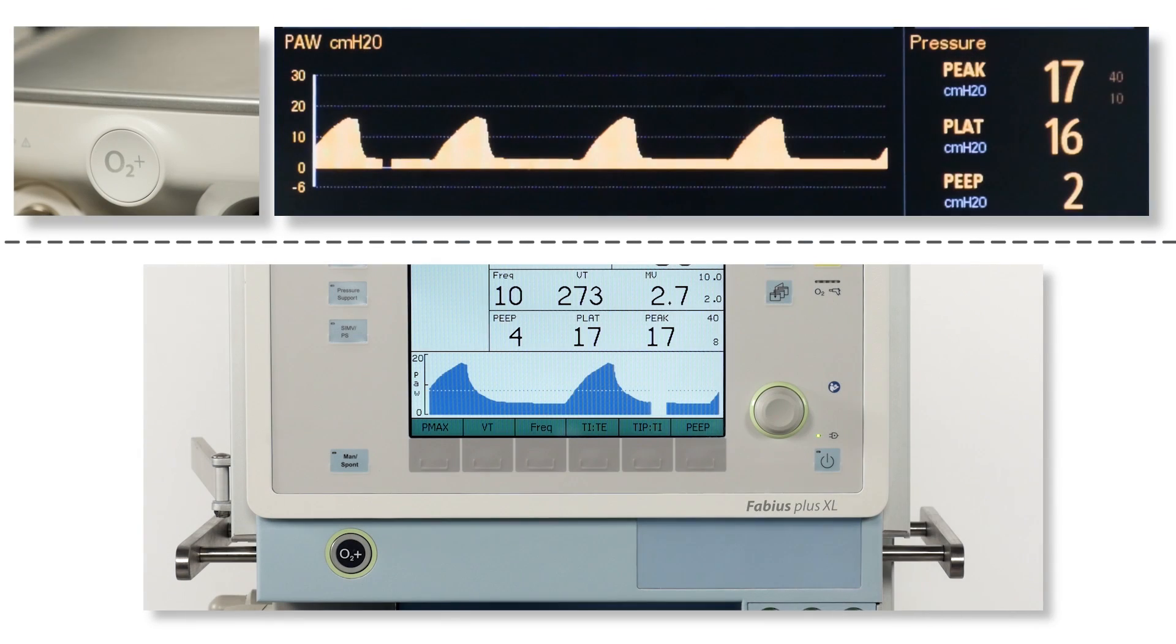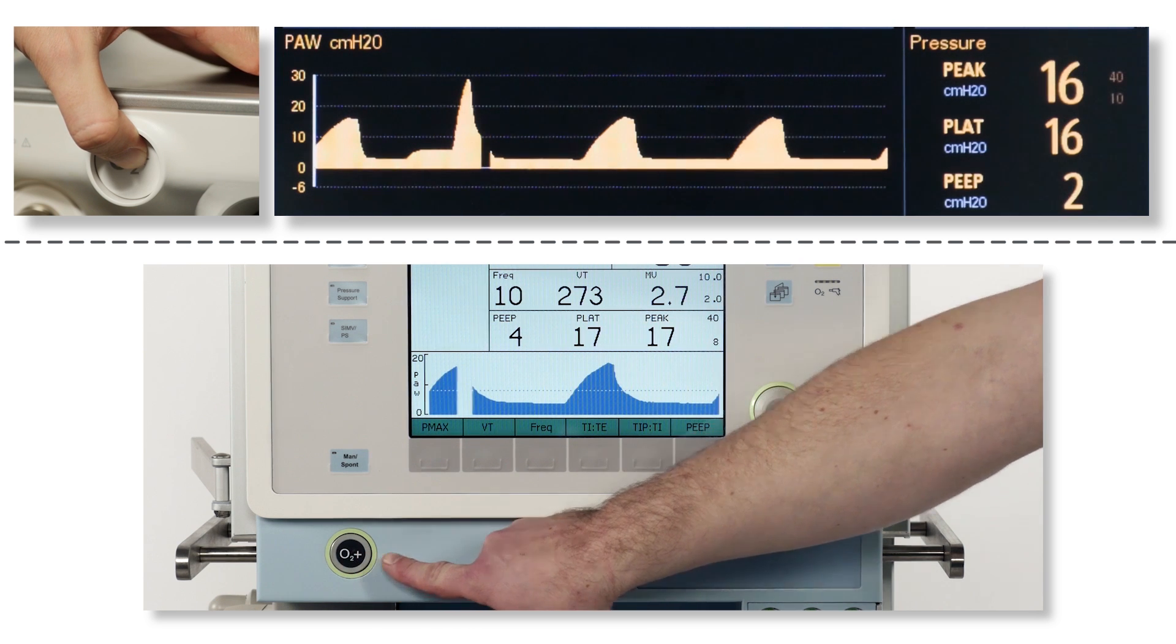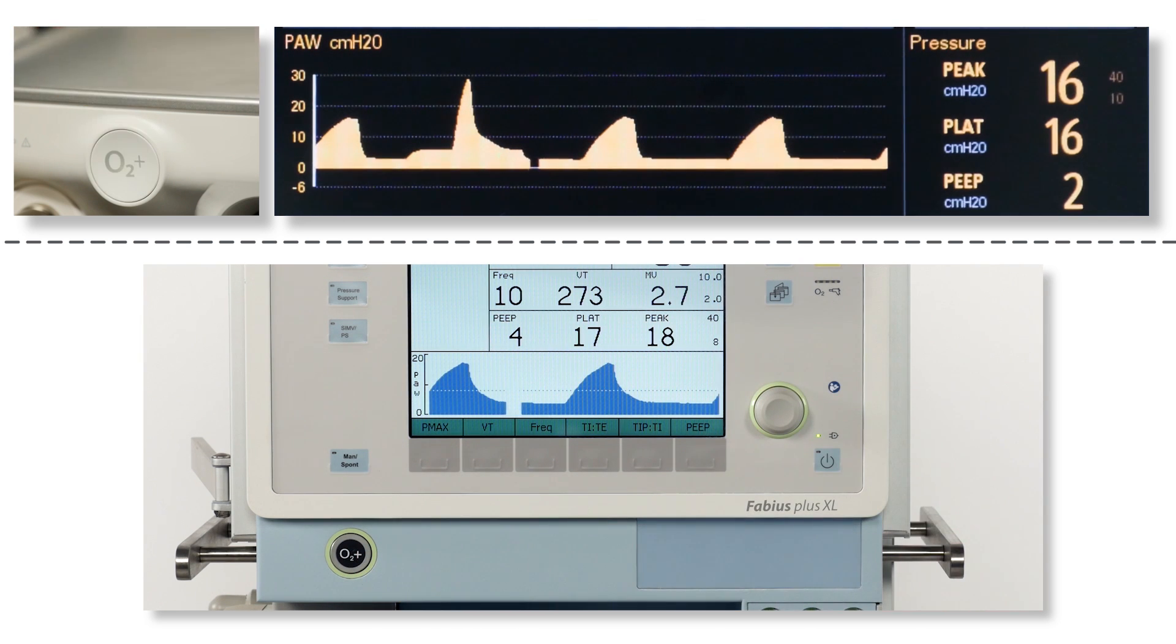Also, the manual O2 flush has no impact on the ventilation delivered. Watch the tidal volume and pressure curve on the screen while the O2 flush button is pressed. No changes in the ventilation pattern of Fabius.